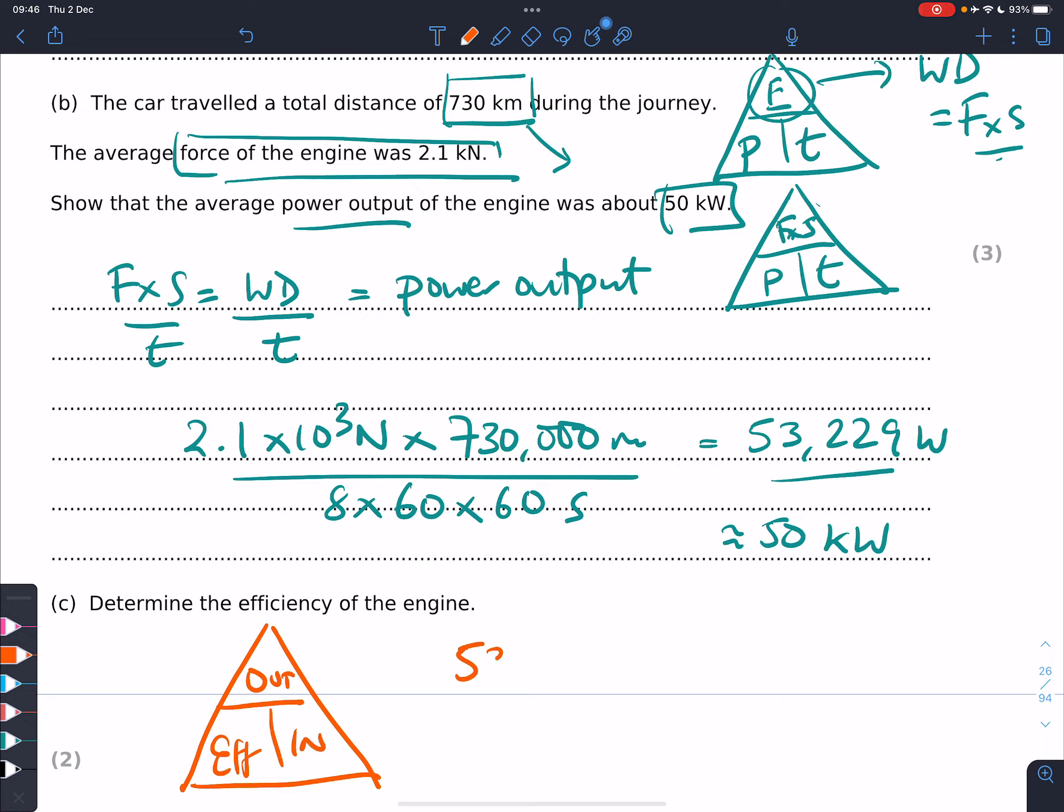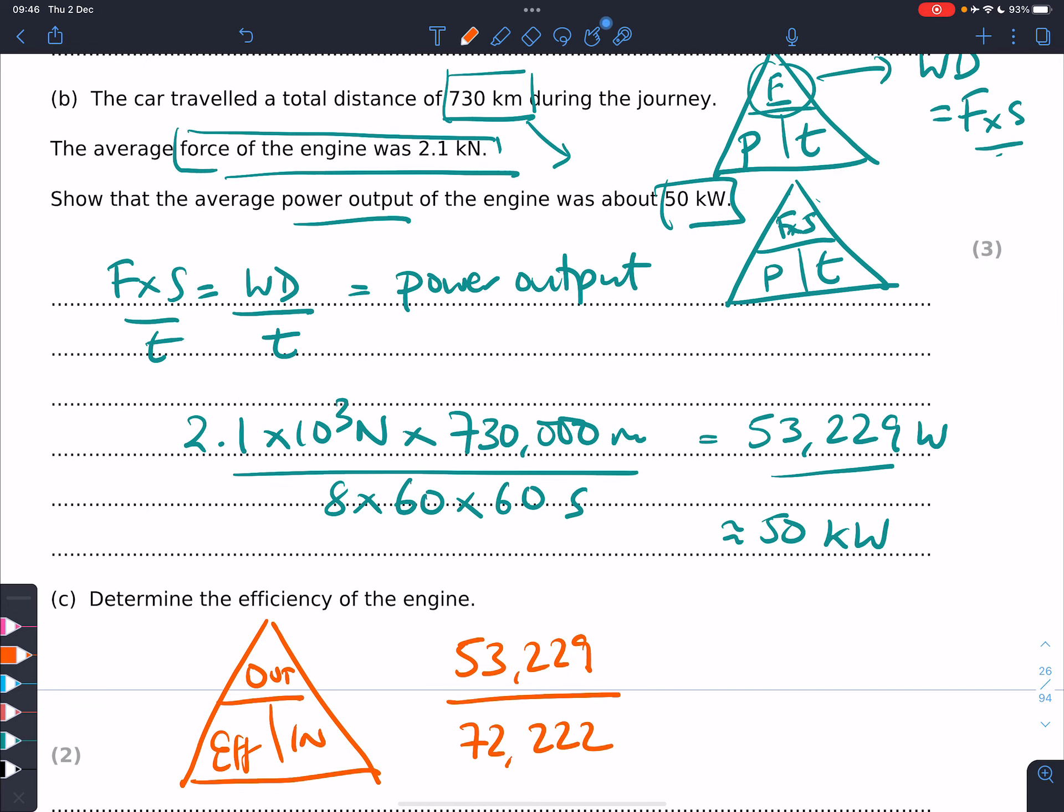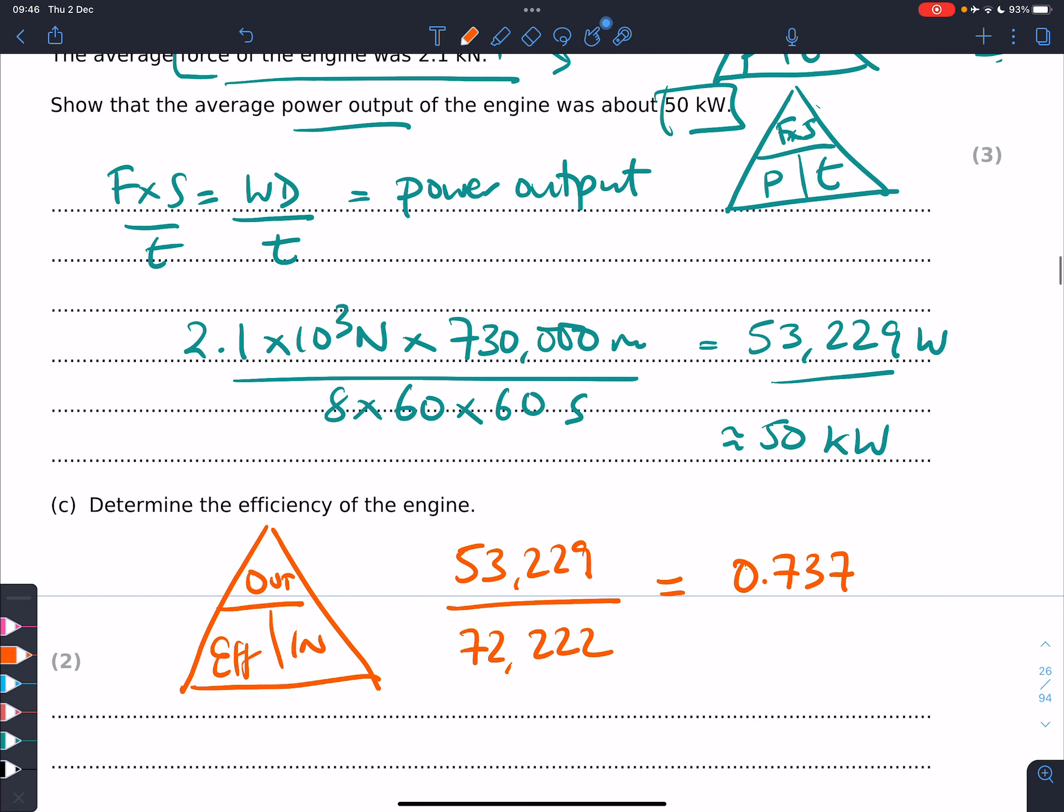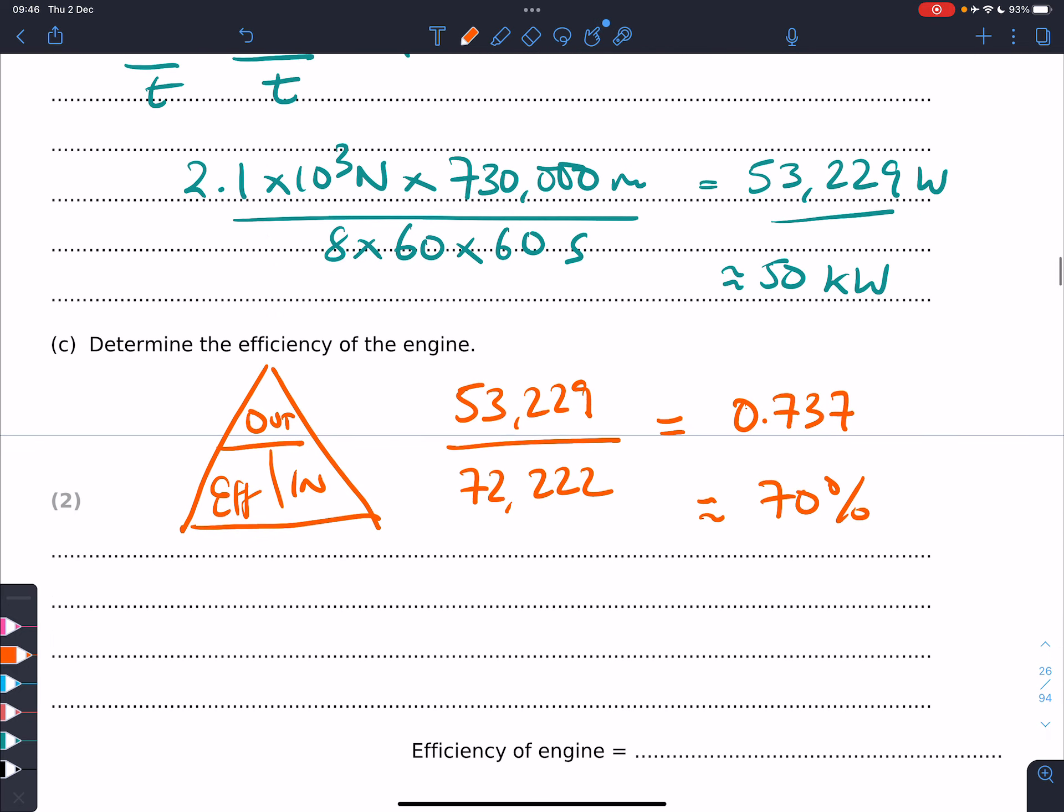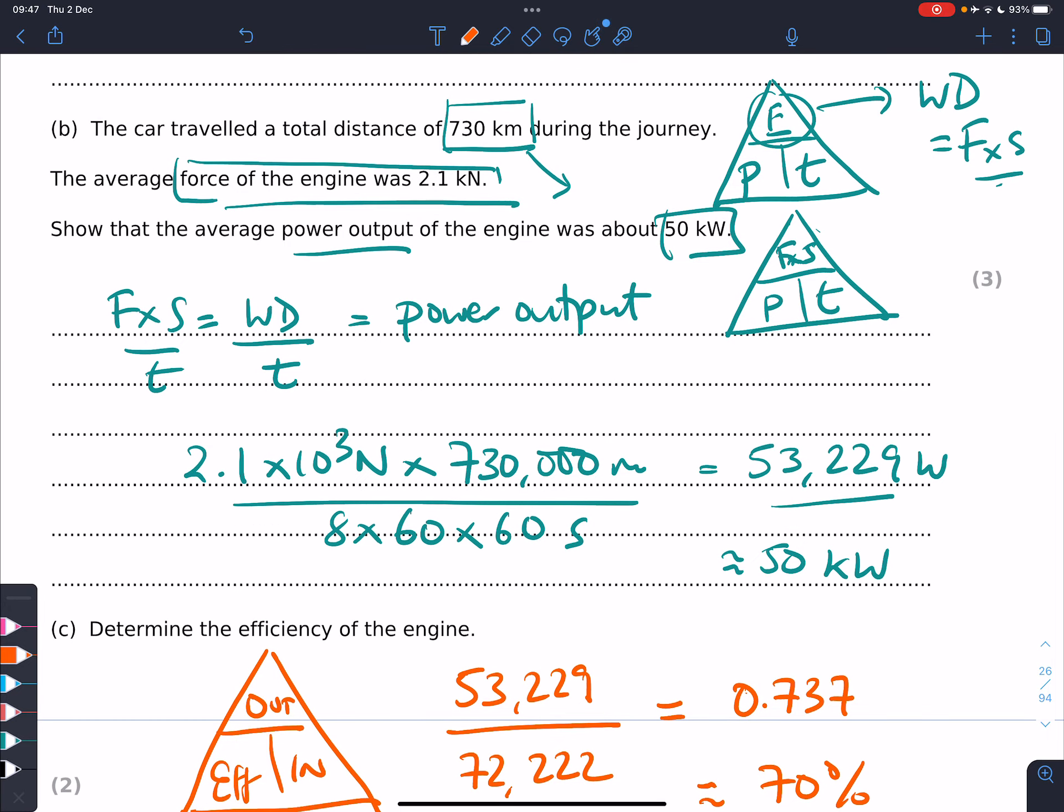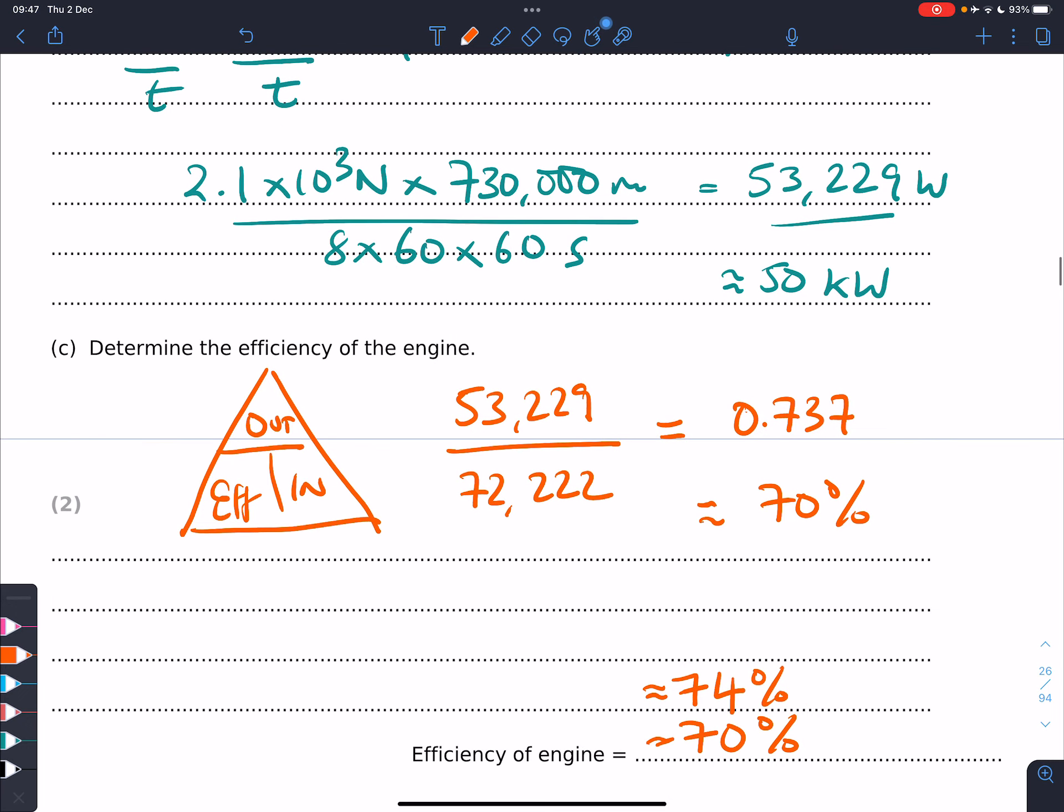What do we get out? 53,229 divided by 72,222. We use the full numbers when we do our calculations and round later. 53,229 divided by 72,222 gives us about 0.737 as a fractional efficiency, which equals about 70% efficient. You multiply by 100 to have it as a percentage. The efficiency of the engine is about 70%. I might say it's 74% and then about 70%, because they've given us two significant figures, so we should give our answer to two significant figures, but any more than that is ridiculous.